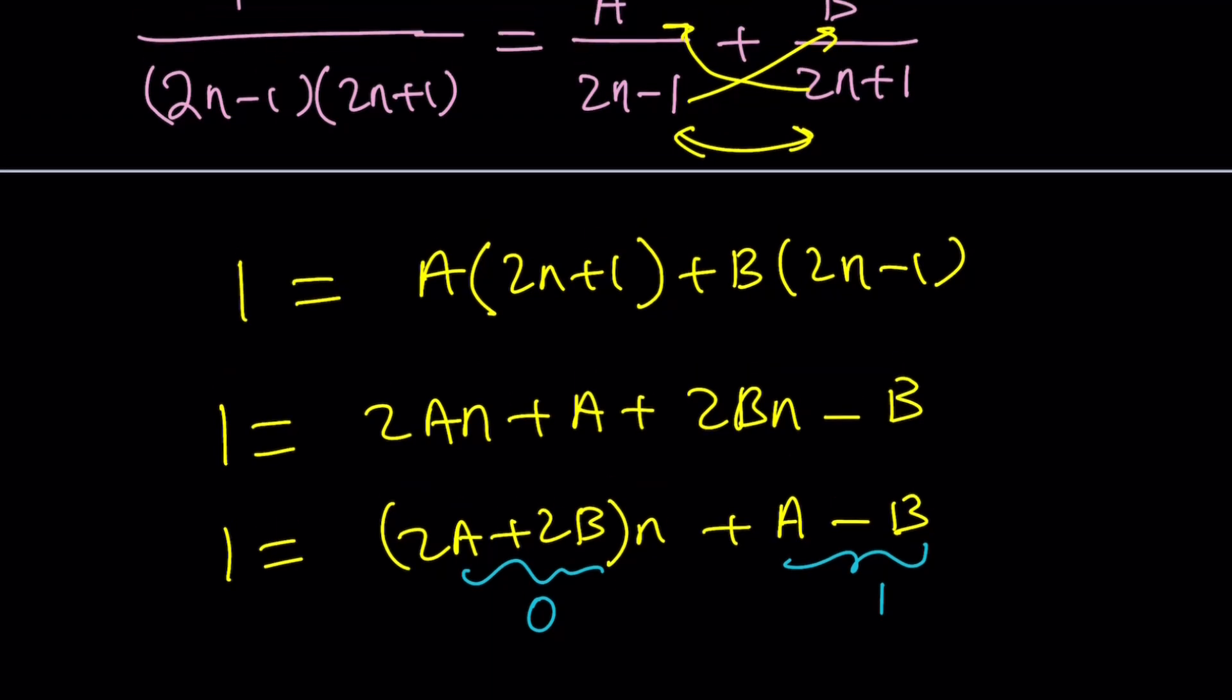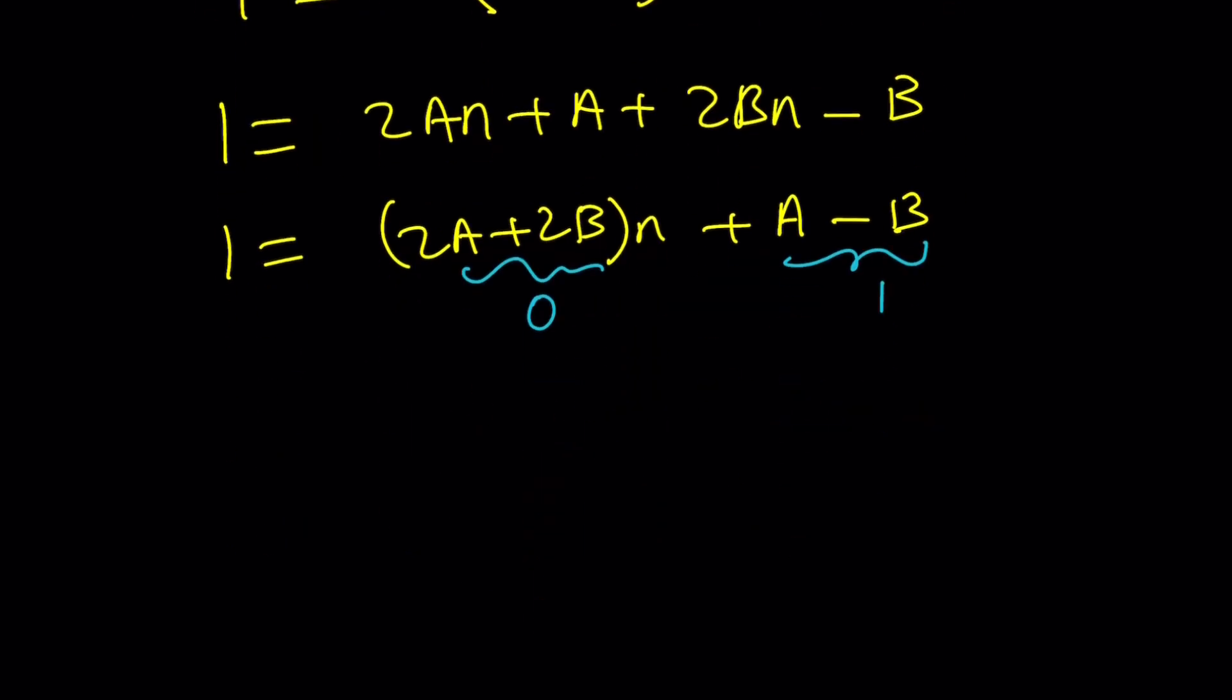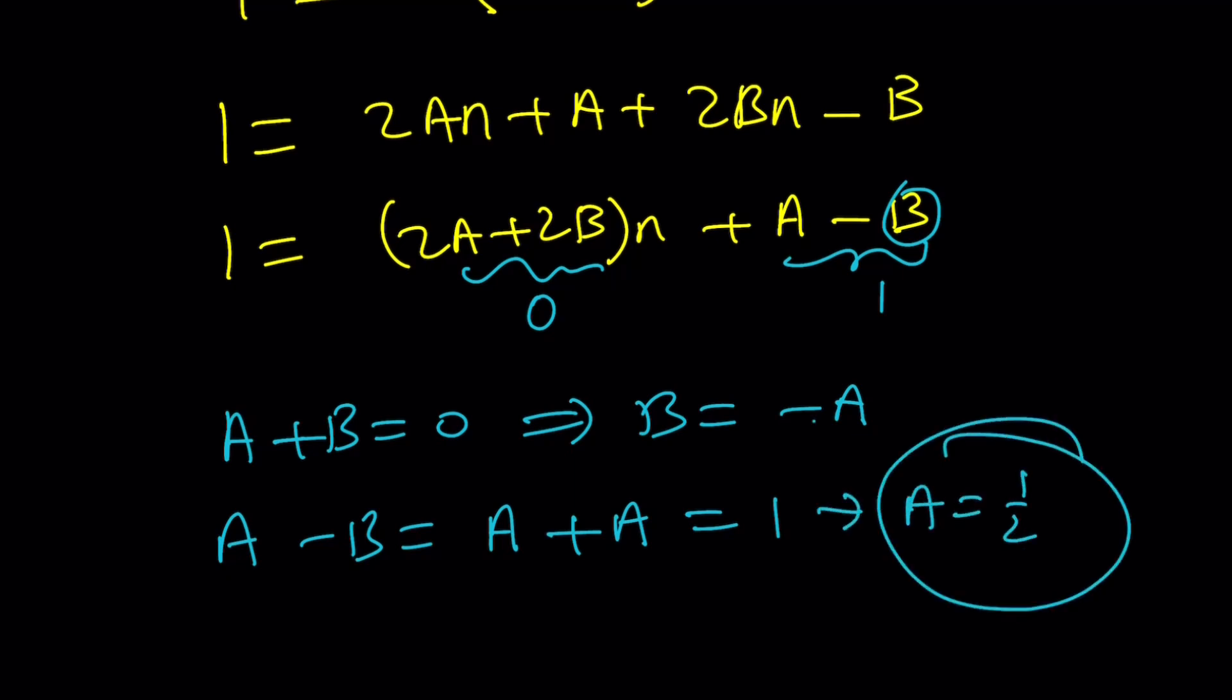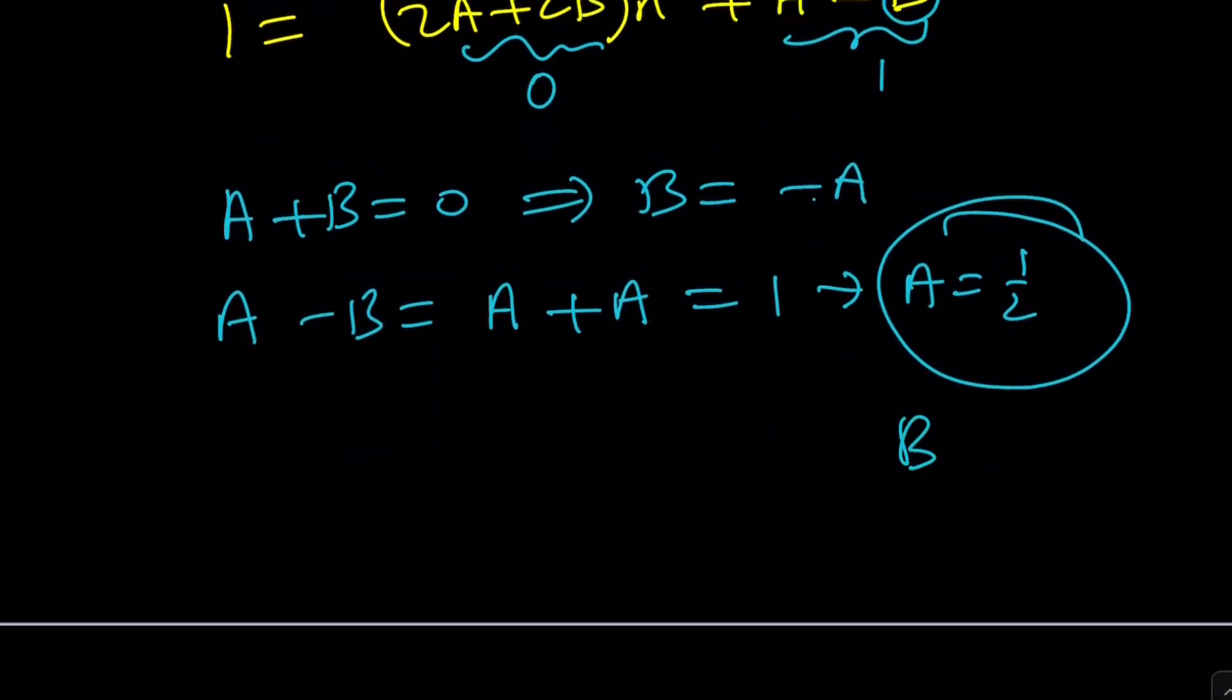Even if you plug in some values like n equals 0, n equals 1, n equals 1 half, you will still get a system of equations. The first one gives me a plus b is 0 by division by 2. That gives me b is negative a. And if you plug it in here, a minus b equals a plus a, because b is negative a, equals 1. From here we get 2a equals 1 and a equals 1 half. So a is 1 half, and since b is the opposite, b becomes negative 1 half.